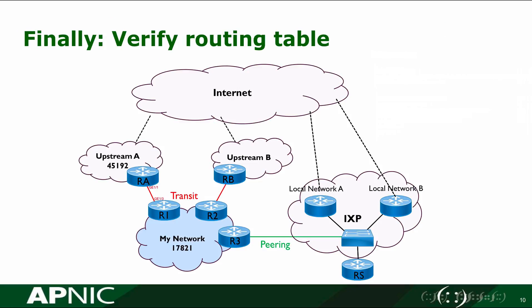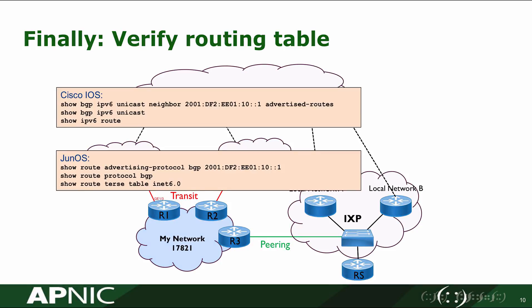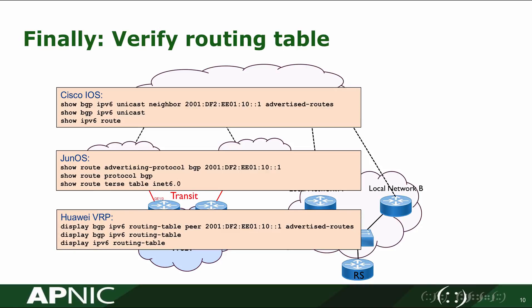Now we are verifying the routing table. These are the commands for verifying the results — the commands for Cisco IOS, Juniper JunOS, and Huawei VRP are shown here.